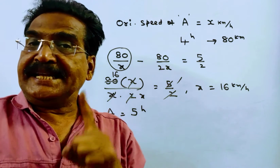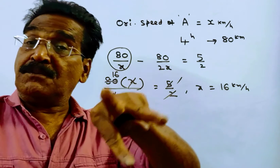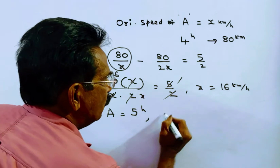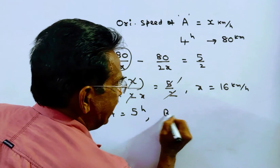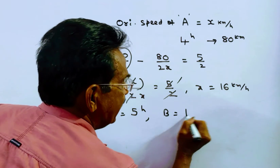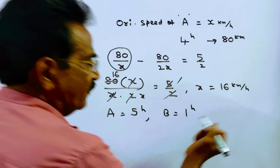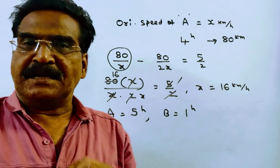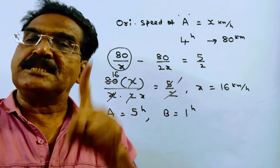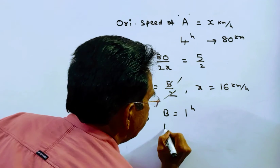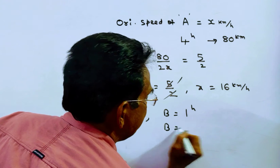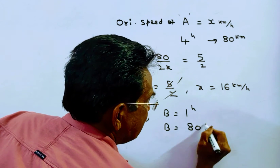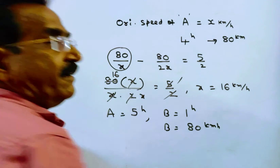Friends, A takes four hours more than B. So B takes only one hour to travel 80 km. That means the speed of B is 80 by 1, that is 80 kmph.